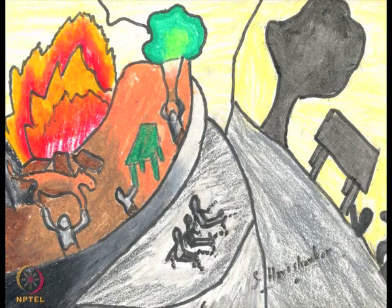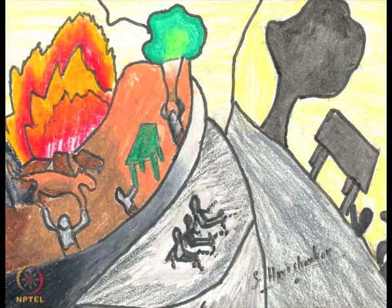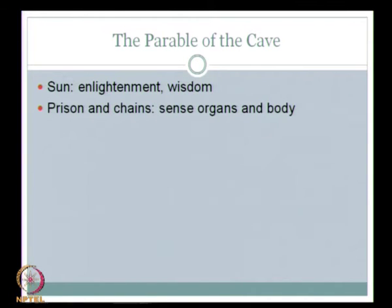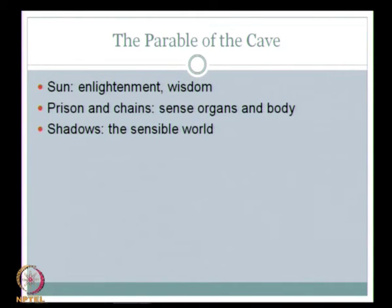Here the cave imagery is depicted: the fire is behind, the people are chained all over their bodies, the wall is in front of them. An object placed behind them cannot be seen directly because they cannot turn their heads back; they see only the shadows reflected on the wall by means of the fire, and they consider these shadows ultimate reality. The world outside, enlightened by the sun, represents wisdom, while the prison and chains represent the sense organs, and shadows represent the sensible world.